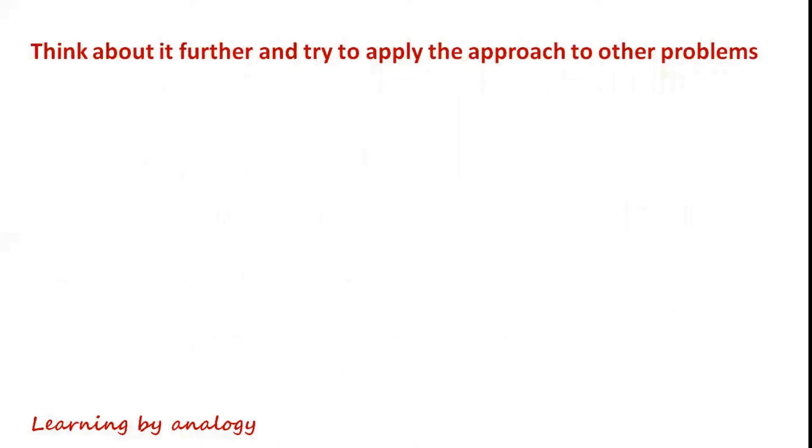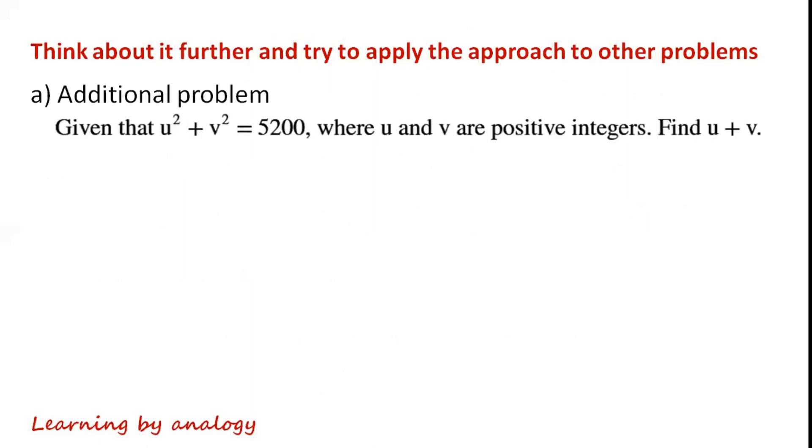Think about the thought process for the previous question further and try to apply the approach to other problems. Such as this one: given that the sum of u squared and v squared is 5200, where u and v are positive integers, find the sum of u and v.